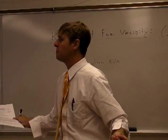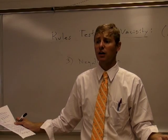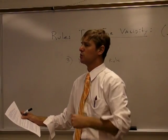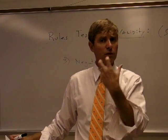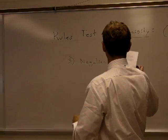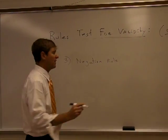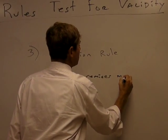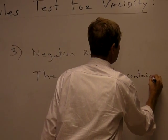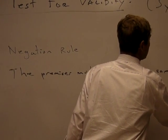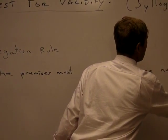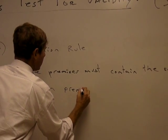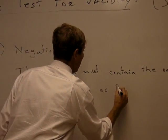You'll know right off the bat that it's invalid without having to do any kind of work — you can forget the diagram and say this one's invalid because the negation rule is broken. The negation rule is: the premises must contain the same number of negation premises as found in the conclusion.